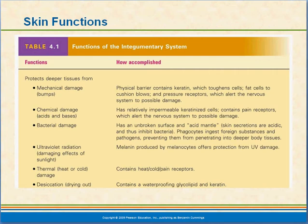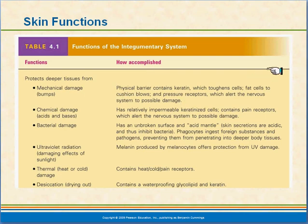Skin functions — there's a wide range of functions in this table in your textbook — but just to go over a few things. It protects us from mechanical damage: lumps, bumps, things like that. It is actually a physical barrier that contains keratin, toughened cells. There are fat cells below that cushion the blows. We have receptors that warn us if we are doing something dangerous. We have heat receptors, and if I put my hand on a stove, I'm going to pull my hand away.